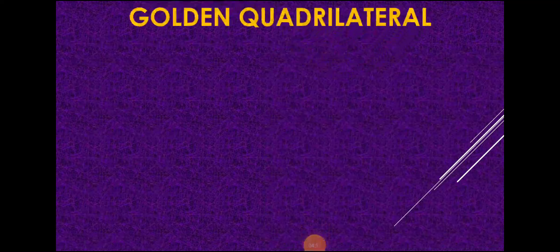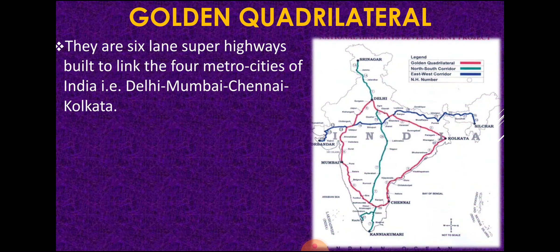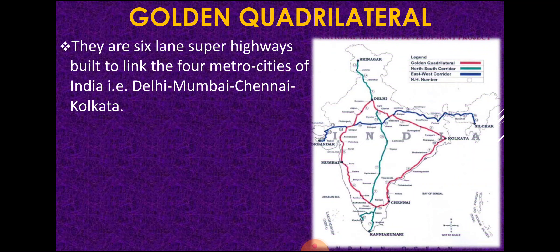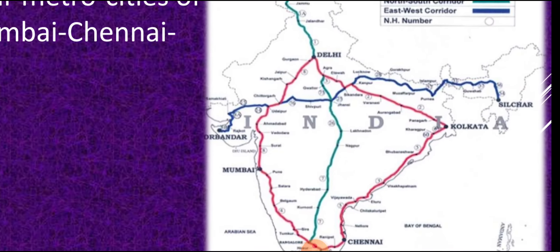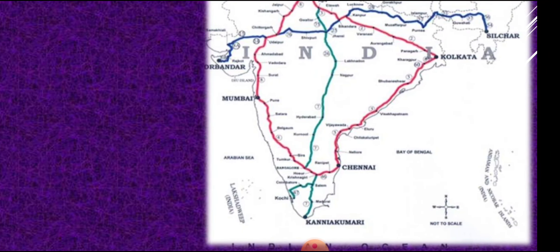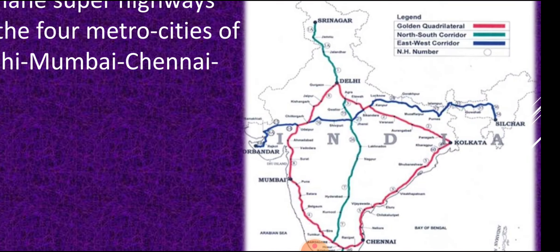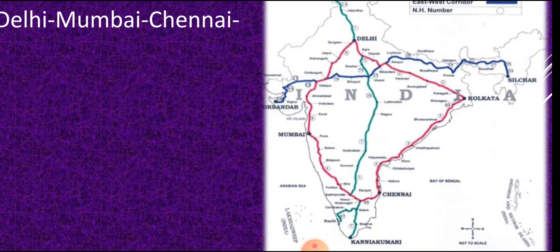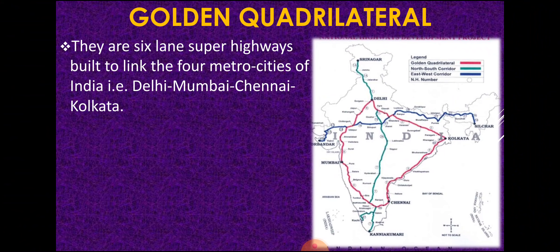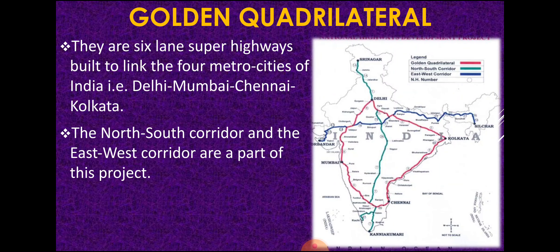First, the Golden Quadrilateral — these are six-lane super highways primarily constructed to connect our four metro cities: Delhi, Mumbai, Chennai, and Kolkata. Along with this, we also have the North-South Corridor connecting Srinagar to Kanyakumari, and the East-West Corridor connecting Porbandar to Silchar. These corridors are also part of the Golden Quadrilateral project, as you can see on the map.